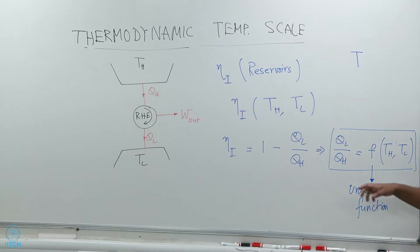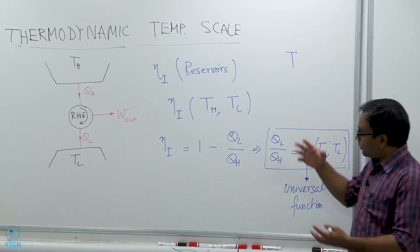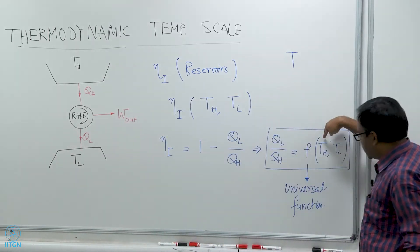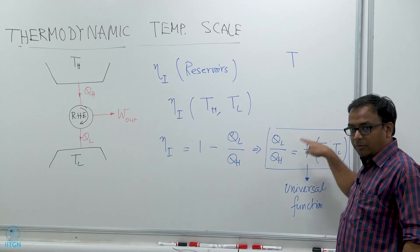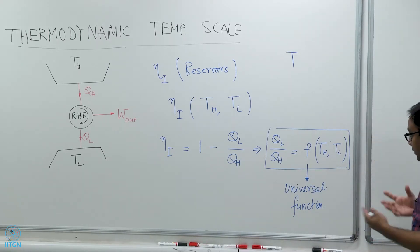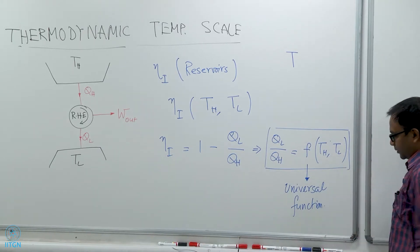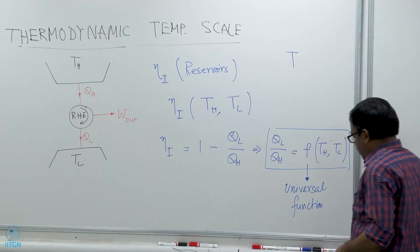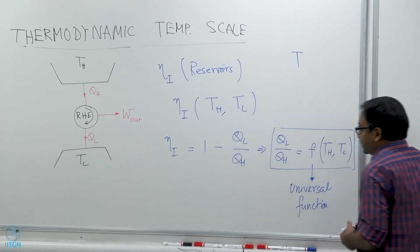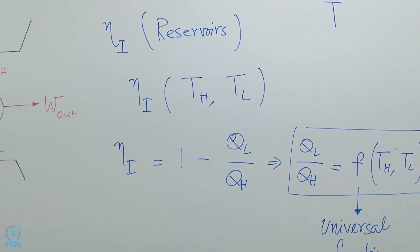Universal function means that if I replace the heat engine, this will not change. If I change the high temperature or the low temperature reservoirs, I will only change T_H or T_L accordingly and this functional form will not change. So f has a universal form — it applies to all heat engines provided T_H and T_L are given. Now, we can do a little bit of trickery and consider one more set of heat engines.